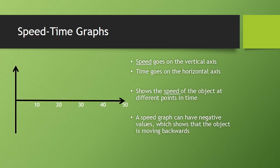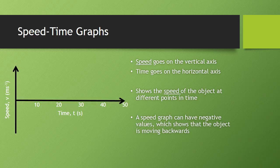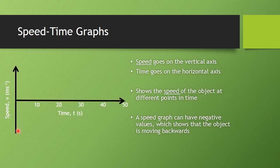In year 11 we have speed time graphs, where speed goes on the vertical axis while time remains on the horizontal axis. This shows the speed of an object at different points in time. Note that a speed graph can have negative values, which is why I've drawn in this negative part here for our speed time graph.